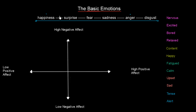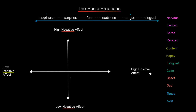Now I would like to play a sort of game. On the right side I have listed many emotions — many affects. I have created a small graph with two dimensions: a horizontal dimension and a vertical dimension. The horizontal direction tells us about positive affect — high positive affect on one end, low positive affect on the other. The vertical dimension tells us about negative affect — high negative affect and low negative affect — creating a space where we can place emotions.